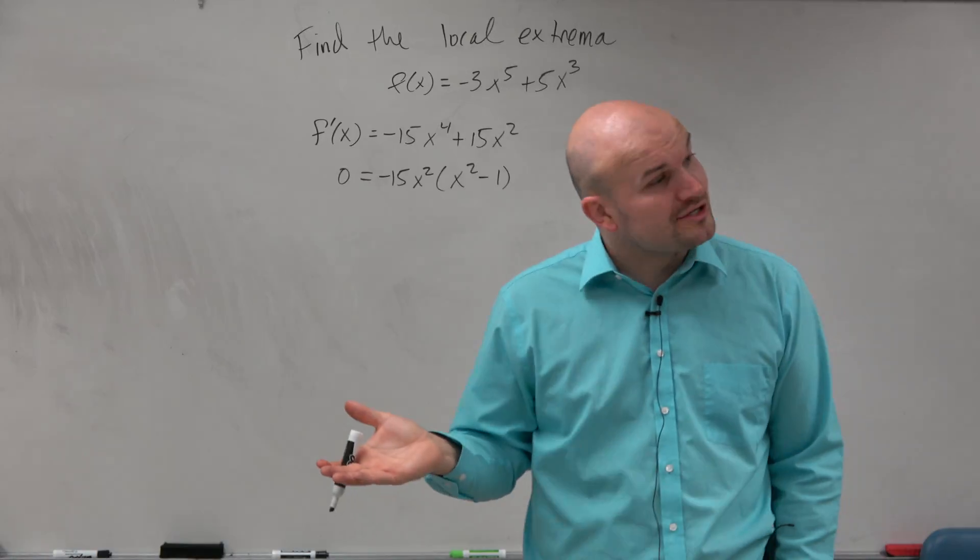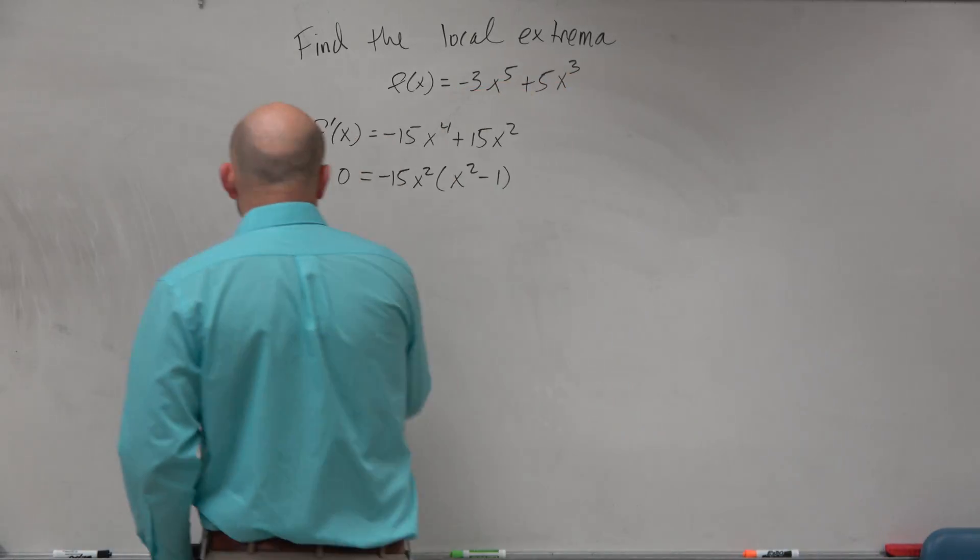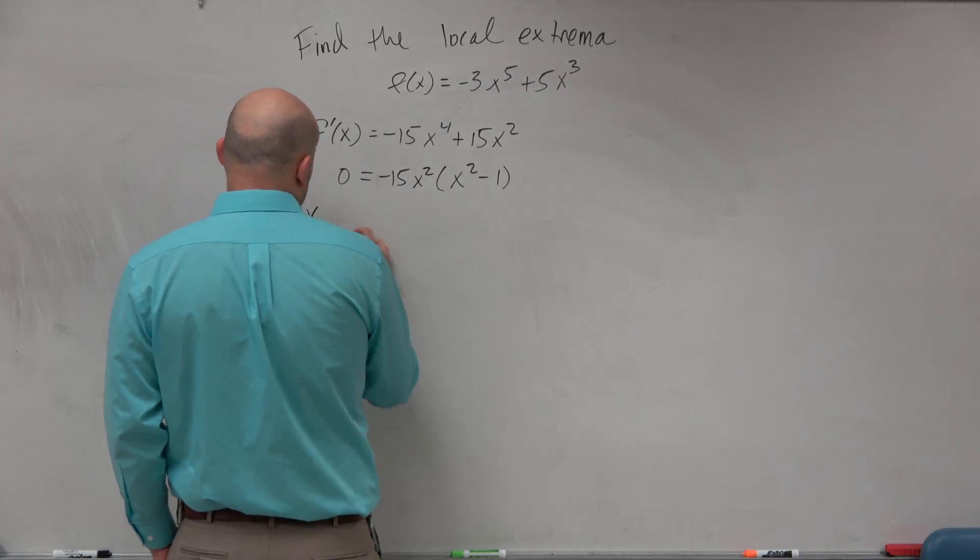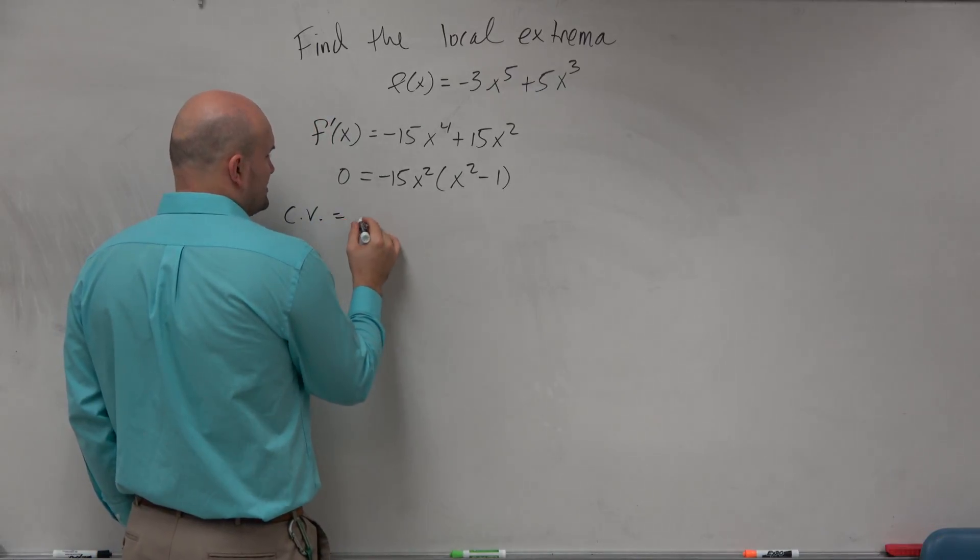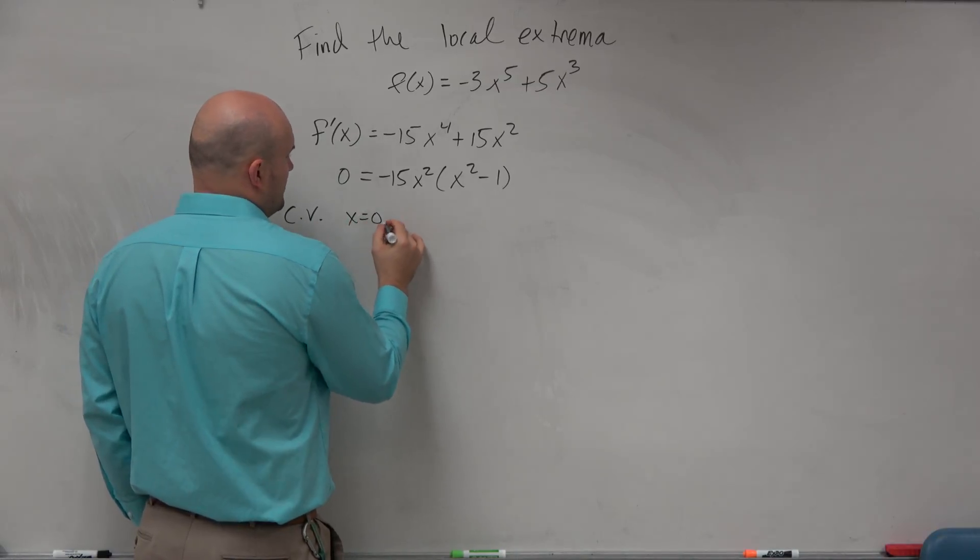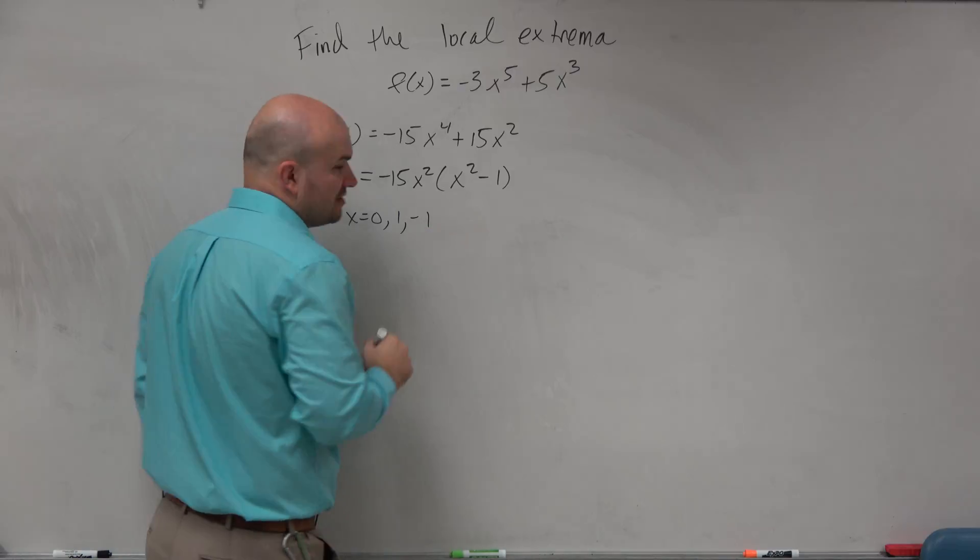When I do that, I'm left with x squared minus 1. Then I could apply the zero product property to solve for x. My critical values, which are my possible extrema, are going to be x equals 0, 1, and negative 1.